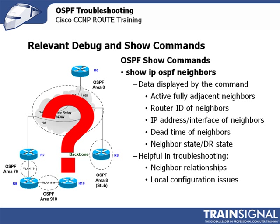Show IP OSPF neighbors is helpful in figuring out local configuration issues and neighbor relationships. It will actually display active fully adjacent neighbors with their router IDs, their IP addresses and interfaces, the dead timers, and what the state is — full, X start, and so forth. Remember, if anything is stuck in that particular state — anything other than full — then you know there might be an issue.